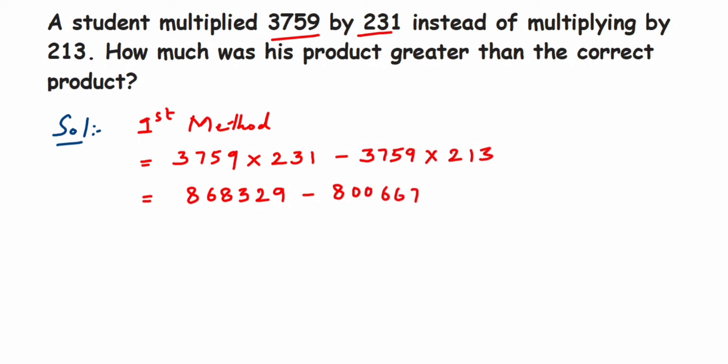Now we have to subtract this. When you subtract this one, you will get 67662. This was one way of solving. What happens is you have to multiply this four-digit number with this three-digit number. It's really lengthy. You do it with these two numbers also. But the second method is pretty simple.